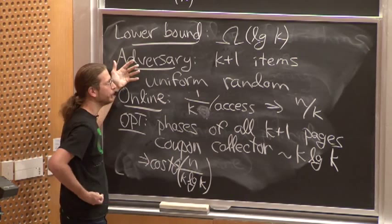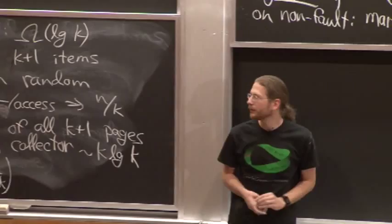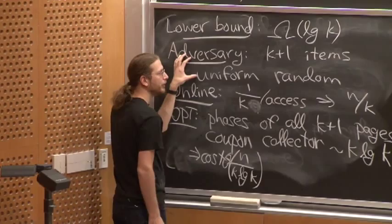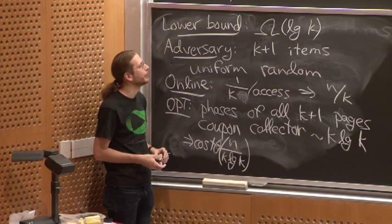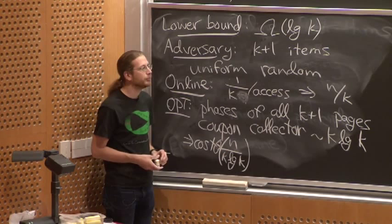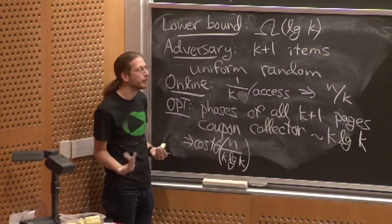One fun thing to notice: for this lower bound, the adversary is randomized but the algorithm can be anything — including a deterministic one. There's no reason to randomize when the accesses already have randomness in them.